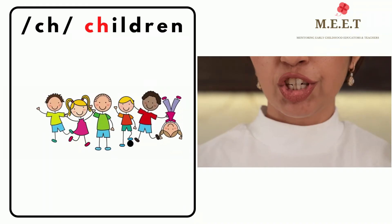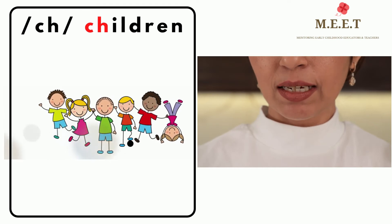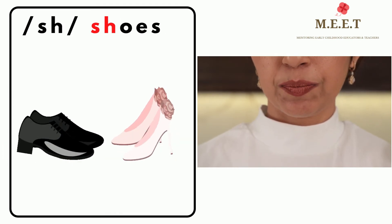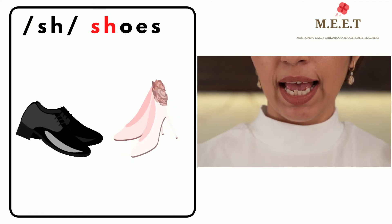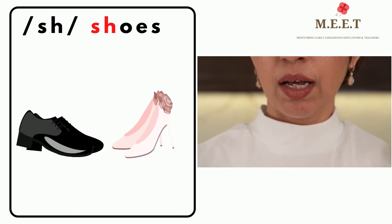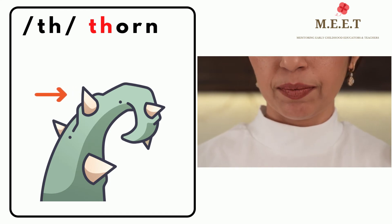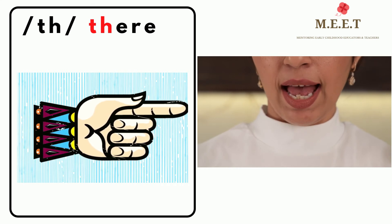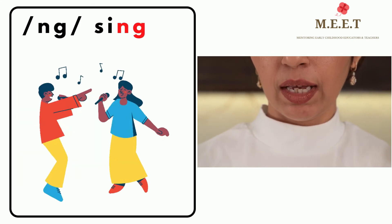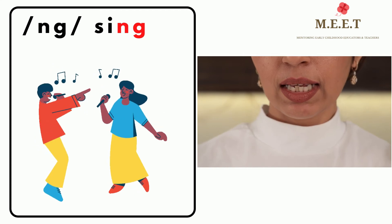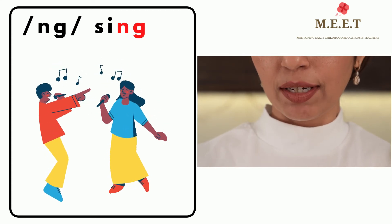The next set of phonemes are digraphs, wherein two letters or graphemes combine to make one sound. 'ch' as in children. 'sh' as in shoes. 'th' as in thorn. 'th' as in there. 'ng' as in the end of the word sing.